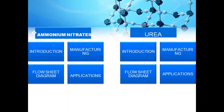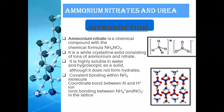In ammonium nitrate, I will tell you its introduction, its manufacturing process with a flowsheet diagram, and then its applications. And in the second topic, urea, I will explain its introduction, its manufacturing process with a flowsheet diagram, and then its applications. First, I want to talk about ammonium nitrate.